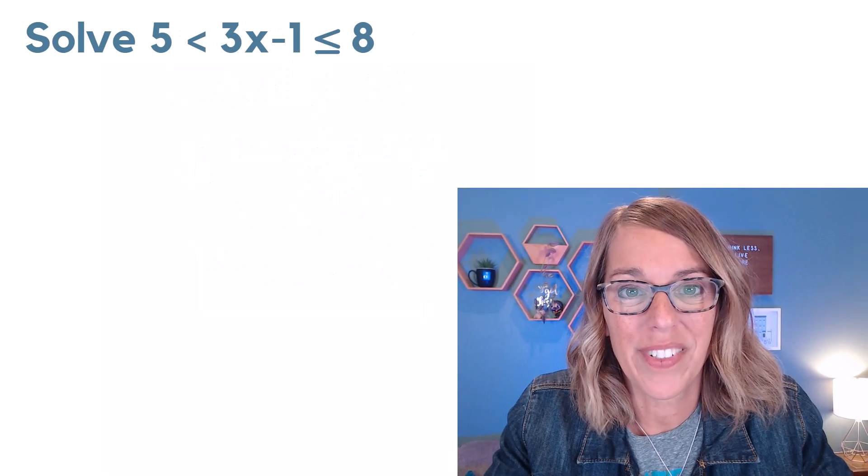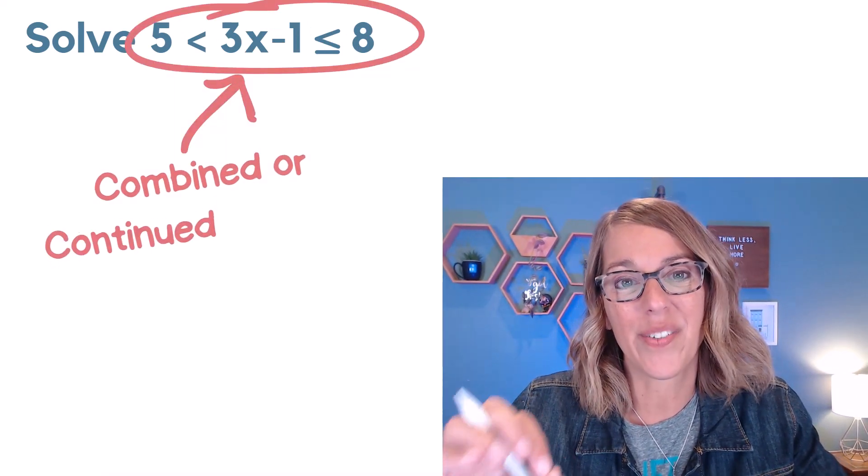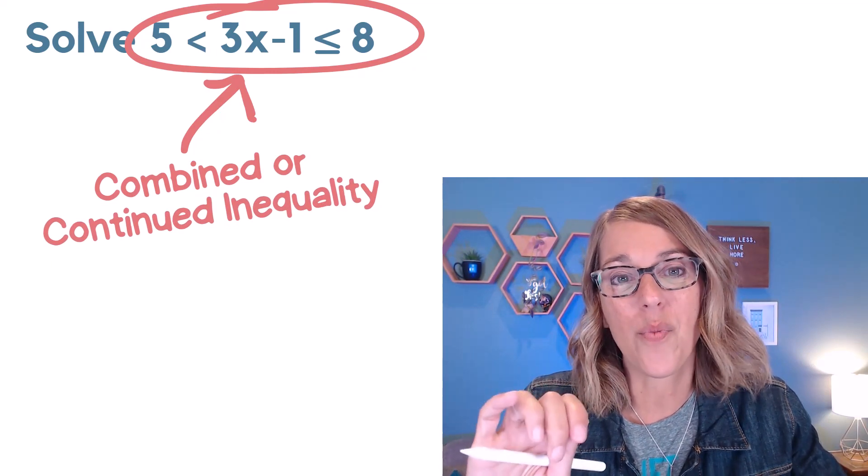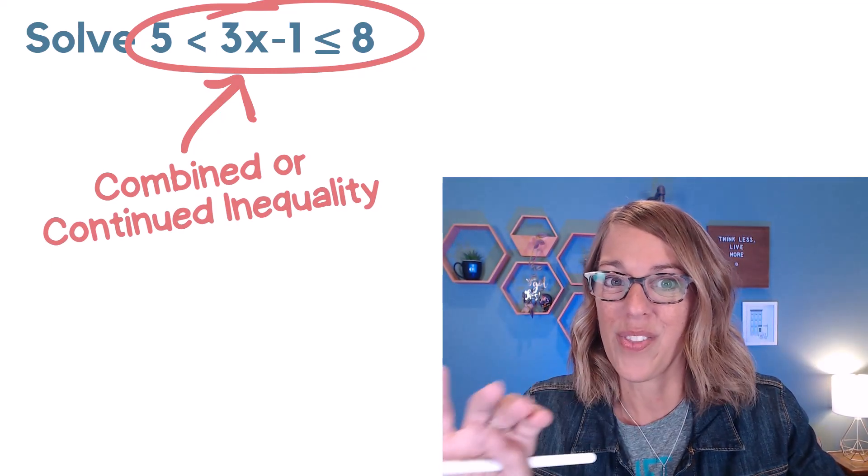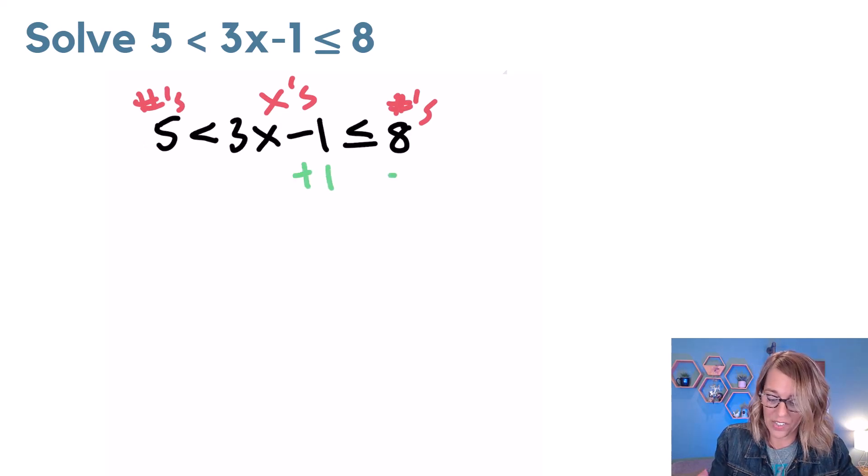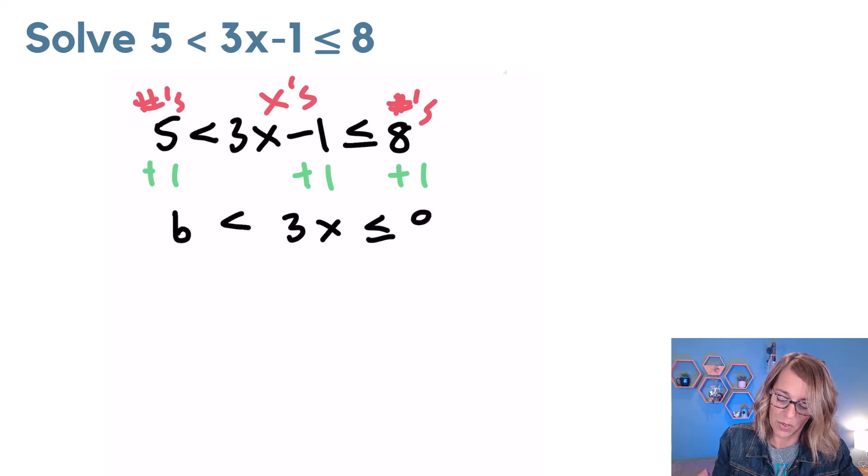This next one has two inequality symbols in it, which means it's a combined or a continued inequality. But we're going to work this the same way. Whatever I do to one side, I need to do to all three sides. So as I'm working this one through, I really want x's this time in the middle, and then numbers on either side. So I can go ahead and start by moving that negative one, I'm going to add it to all three sides. That gives me 6 is less than 3x is less than or equal to 9.